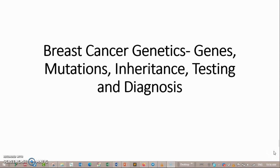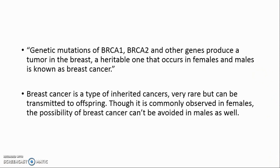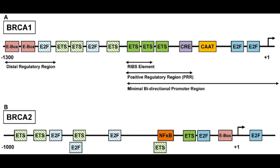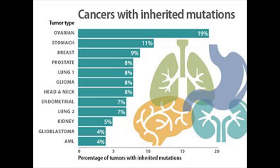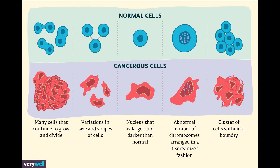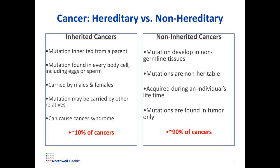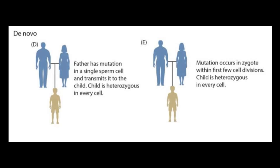Breast cancer genetics covers genes, mutations, inheritance, testing, and diagnosis. Genetic mutations of BRCA1, BRCA2, and other genes produce a heritable tumor in the breast that occurs in both females and males. Breast cancer is a type of inherited cancer — very rare but can be transmitted to offspring. Various types of cancer are broadly divided into two major categories: inherited cancers and non-inherited cancers. The inherited type can be spread to offspring as well.